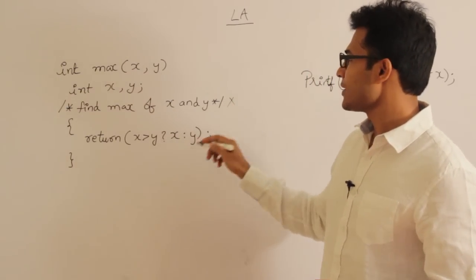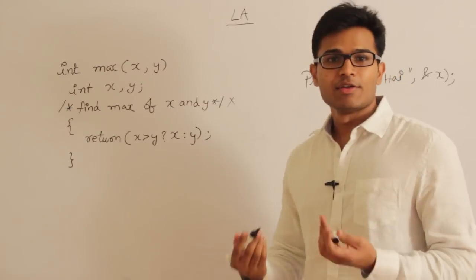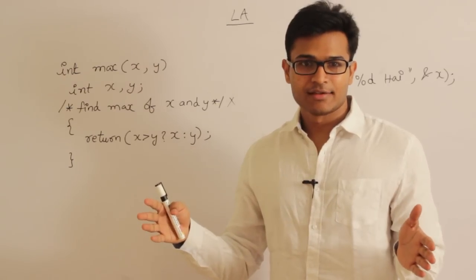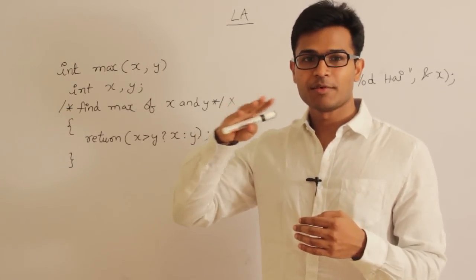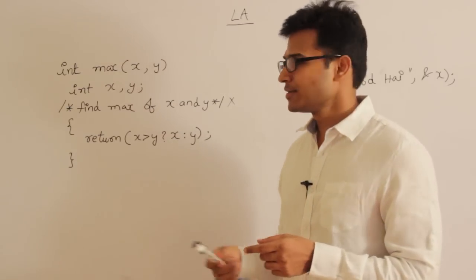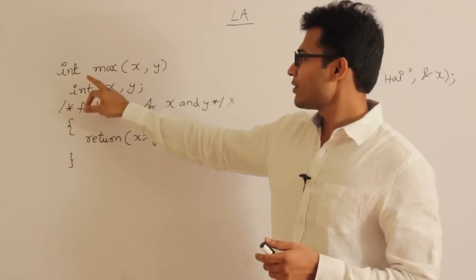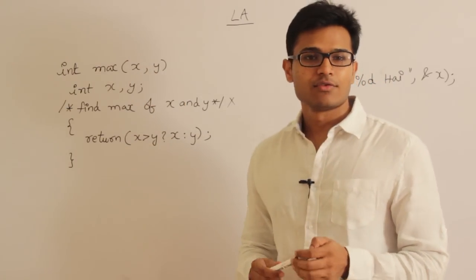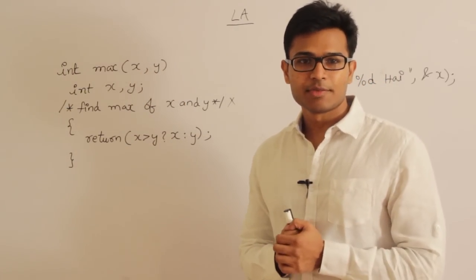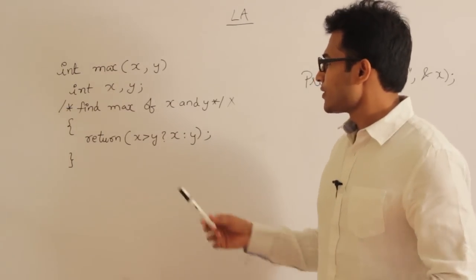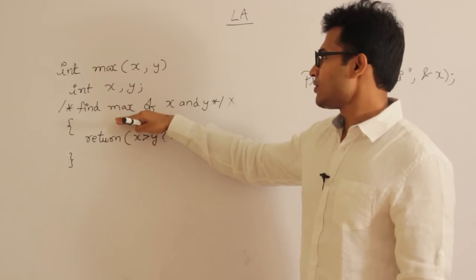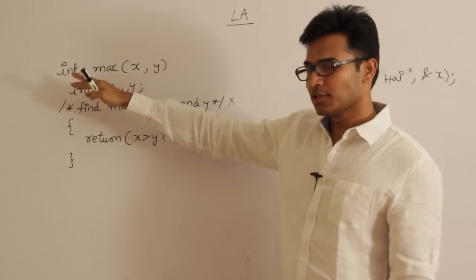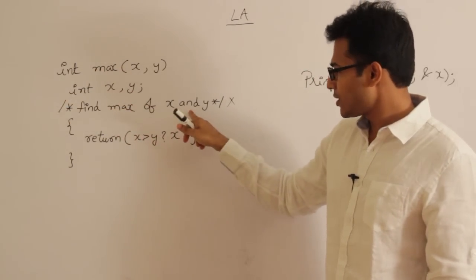The lexical analyzer eliminates comments and white spaces. Interestingly, even if you write the entire C program in one line, there will be no errors. You need not write the C program in many lines. Between int and max you have to give a space, but after that no extra spaces are required. The main responsibility of the lexical analyzer is converting lexemes into tokens and removing comments and white spaces.